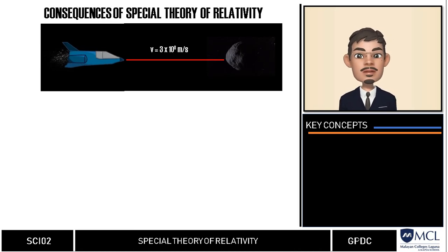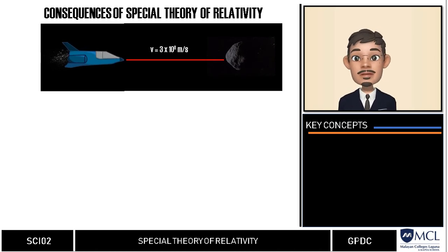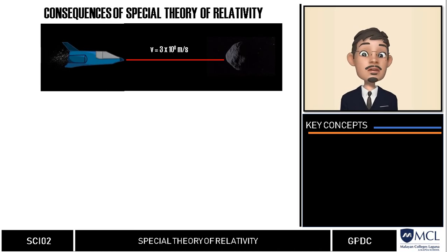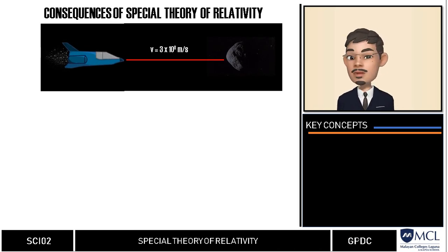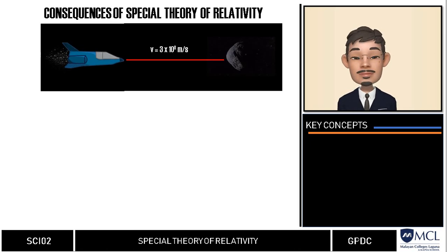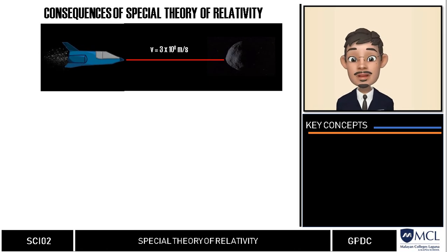Einstein noted that for the speed of light to be universal, the motion through space can be diverted into motion through time, or the motion through time can be diverted into motion through space. In simple words, space contracts and time dilates as a consequence of relativity.